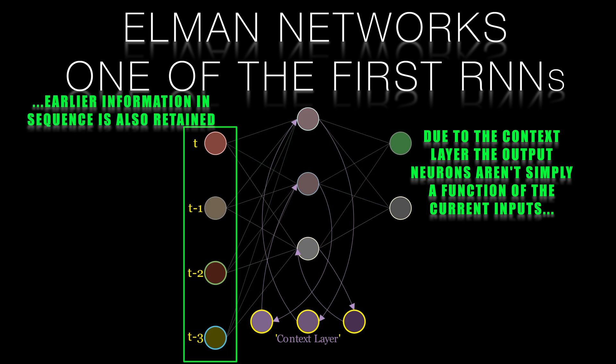Despite their innovation, Elman networks had a few significant shortcomings. Firstly, the vanishing or exploding gradients problem.